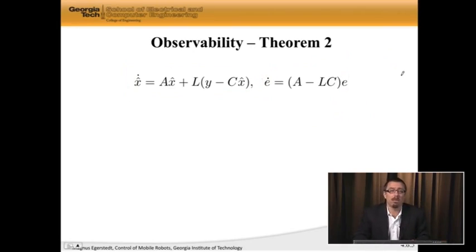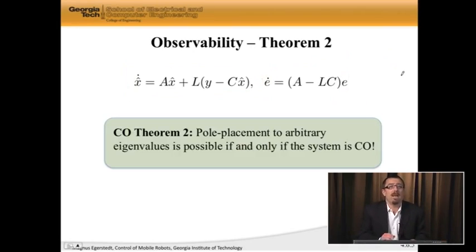CO theorem number two tells me that this is possible if and only if, using pole placement to arbitrary values, if and only if the system is completely observable.